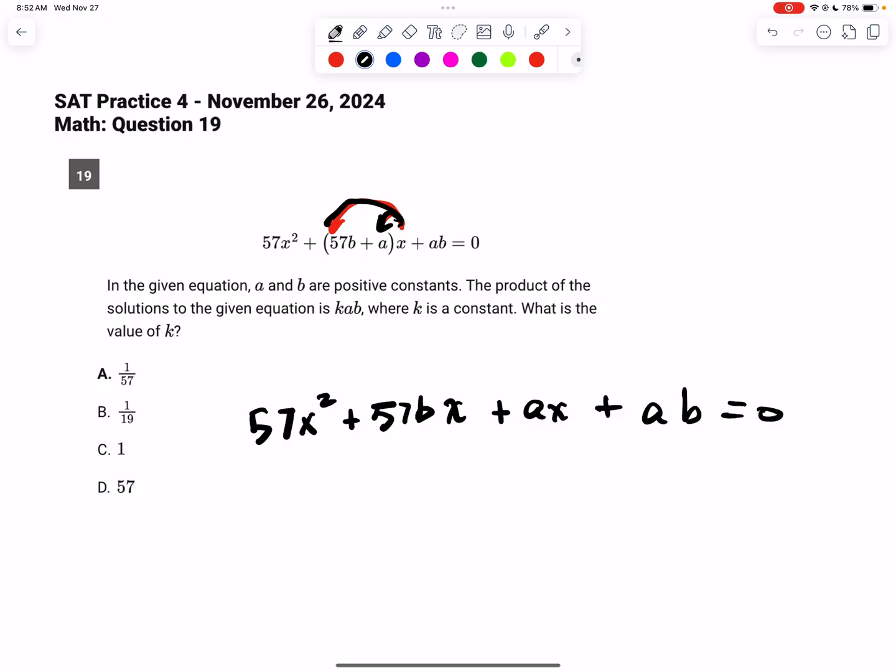Alright, so once we have that expanded, now we can see there's some factoring by grouping that can happen. And the reason I know that I can go in this direction is because I'm trying to come closer to a solution. So I'm trying to get this in factored form. Right now it's just in a random weird form. Alright, so if I group this in this way, in that way, we can factor,